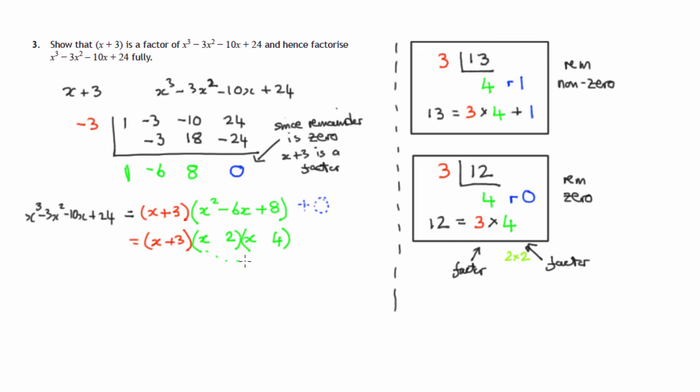The outside terms there will give us 4x and the inside terms will give us 2x, and to get a minus 6x they will both have to be negative. So it would be a minus 2x and a minus 4x.